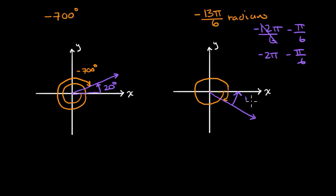And that is going to be pi over six radians. It's a positive angle with the x-axis, and we're done.